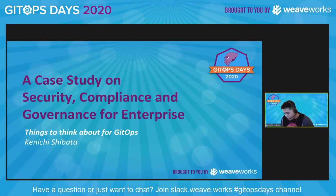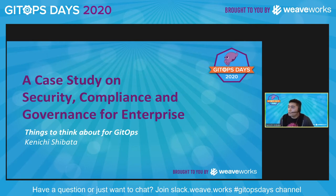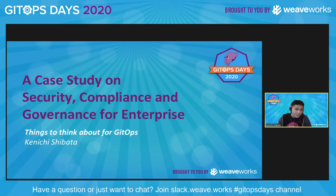We heard from Matt and Michael earlier about the principles and foundations of what you need to do in order to build secure and compliant GitOps. Today I'm here to bring a very specific case study — a fictional, entirely fictional case study about how you can bring all of these tools together and apply it to a real-life use case. This is a case study, which means most of the examples, frameworks, and diagrams are very highly opinionated. These are my opinions, but I'd like to share them.